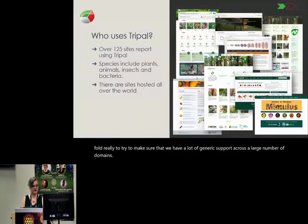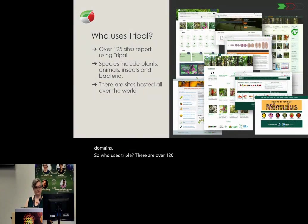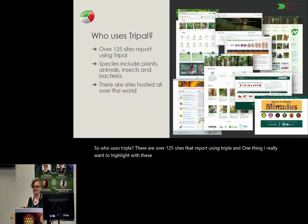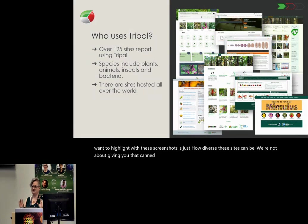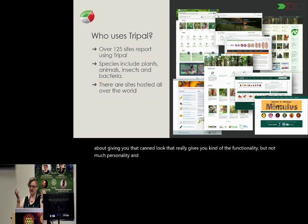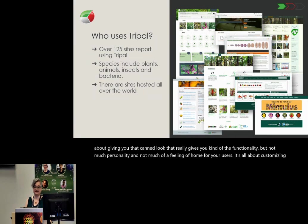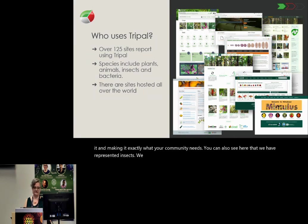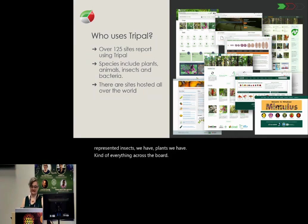So who uses TRIPLE? There are over 125 sites that report using TRIPLE. One thing I really want to highlight with these screenshots is just how diverse these sites can be. We're not about giving you that canned look — it's all about customizing it and making it exactly what your community needs. You can see we have represented insects, plants, and everything across the board. These sites are hosted all over the world, and the community is all over the world.